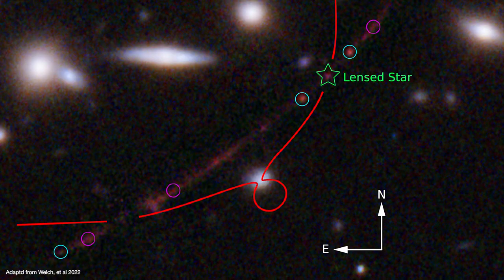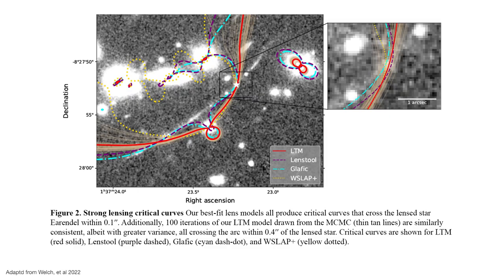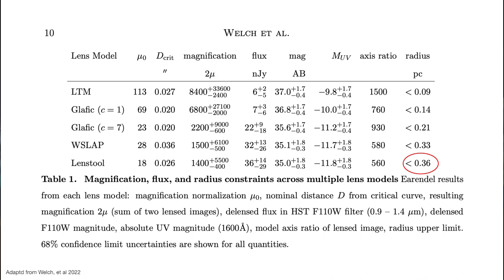So the region of space that's coming from has to be really small. Now exactly how small depends on how you model the lens. And that's because each model makes certain assumptions about the distribution of matter and dark matter in the cluster and the alignment geometry of the lens and the background star and many other factors. Using different lensing models though, the team found the radius of the region couldn't be any larger than 0.36 parsecs. That means the diameter of Earendel's region of space is no larger than 2.3 light years across.